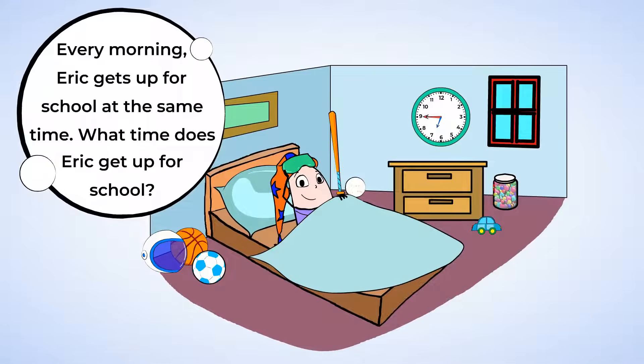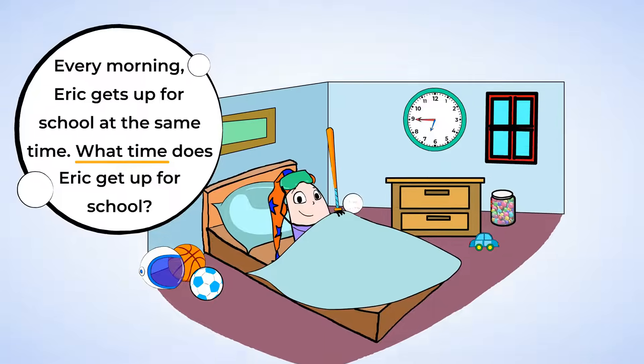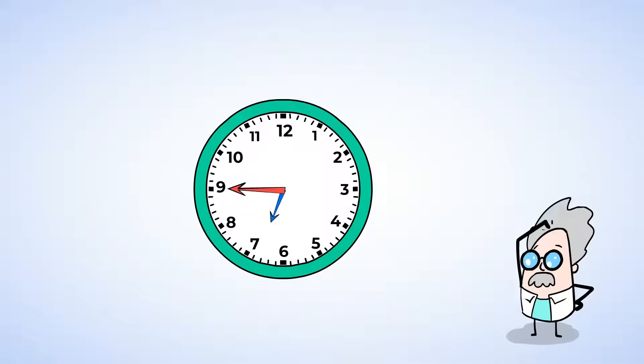Every morning, Eric gets up for school at the same time. At what time does Eric get up for school? First, let's look at the hour hand. We can see that it's between the 6 and the 7. So the hour is, that's right, 6. Next, look at the minute hand. It's on the 9.